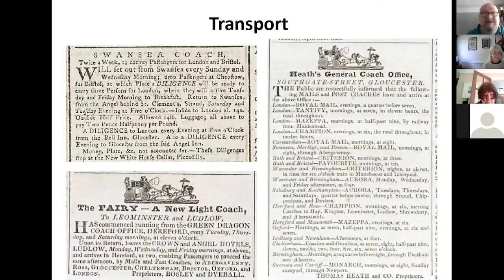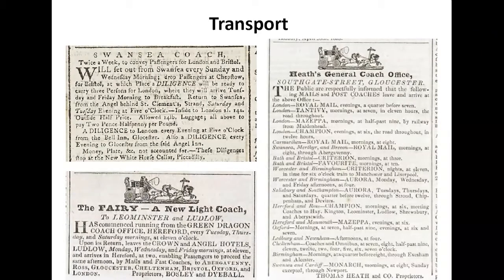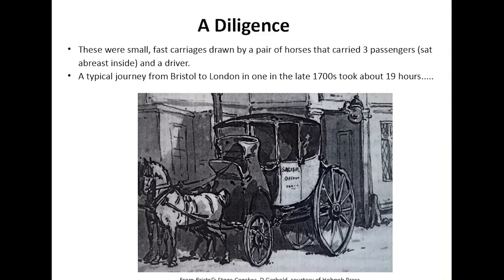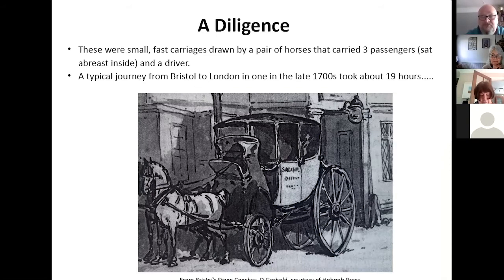You always find lots of transport information in these papers. This shows various coaches and stagecoaches, which were the only things you could use up until the 1830s–1850s. They tended to advertise what mails were going where, from where, and when they should arrive. The advert about the diligence is quite a nice one — there was a big difference between the diligence and the normal stagecoach. They were quite small, fast carriages, carrying three passengers abreast and one driver, recommended for their speed. Even so, a typical journey London to Bristol took about 19 hours.